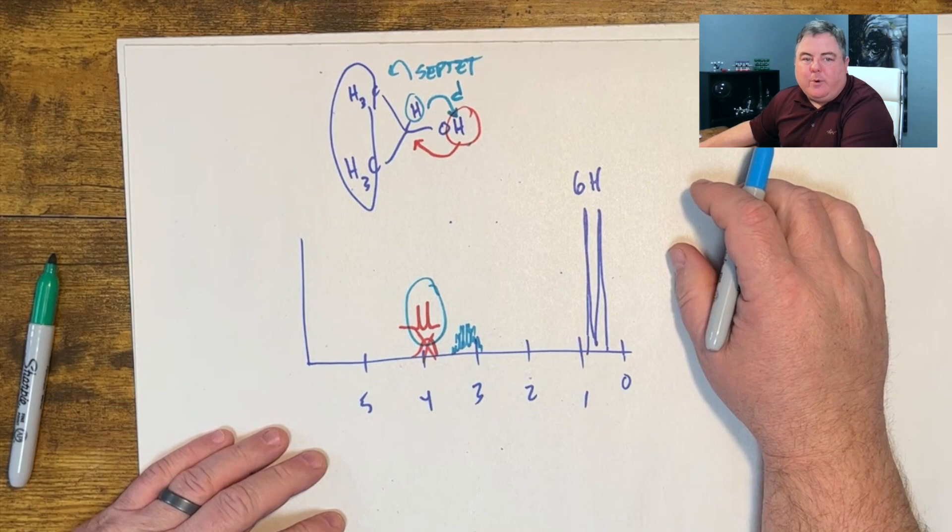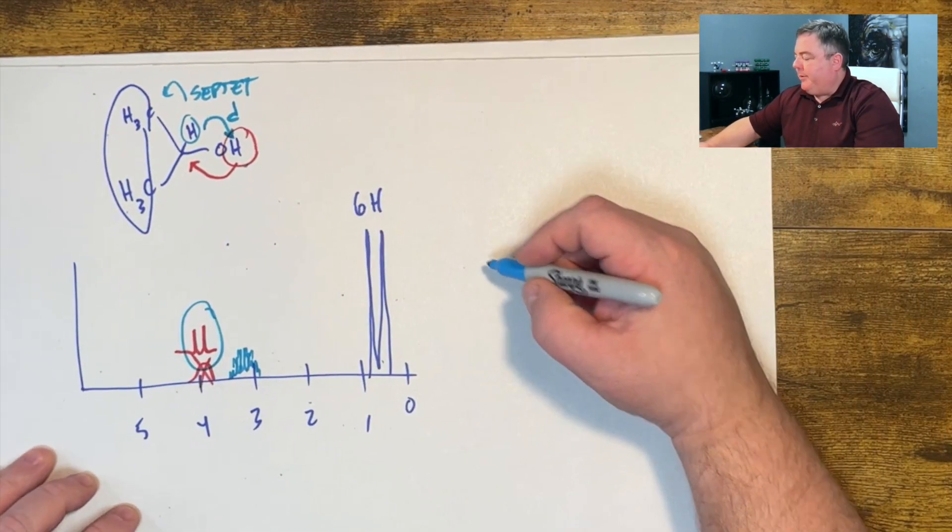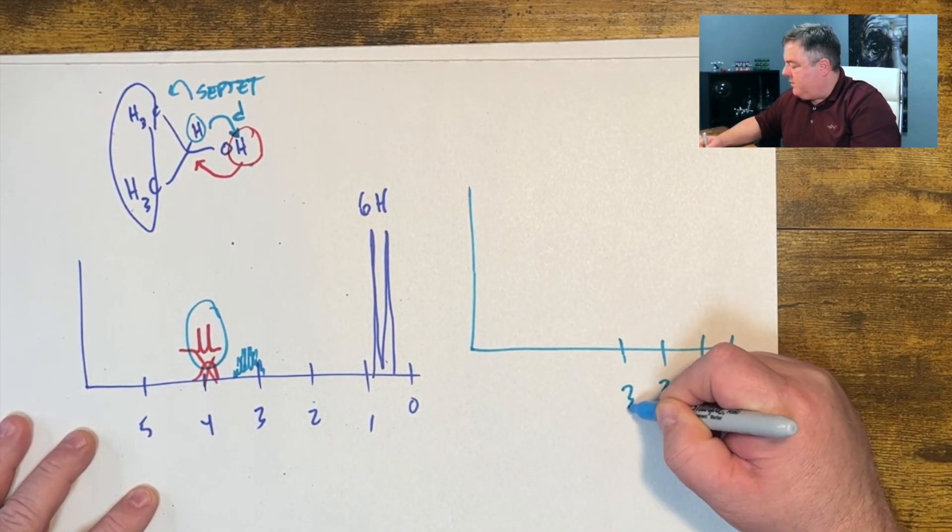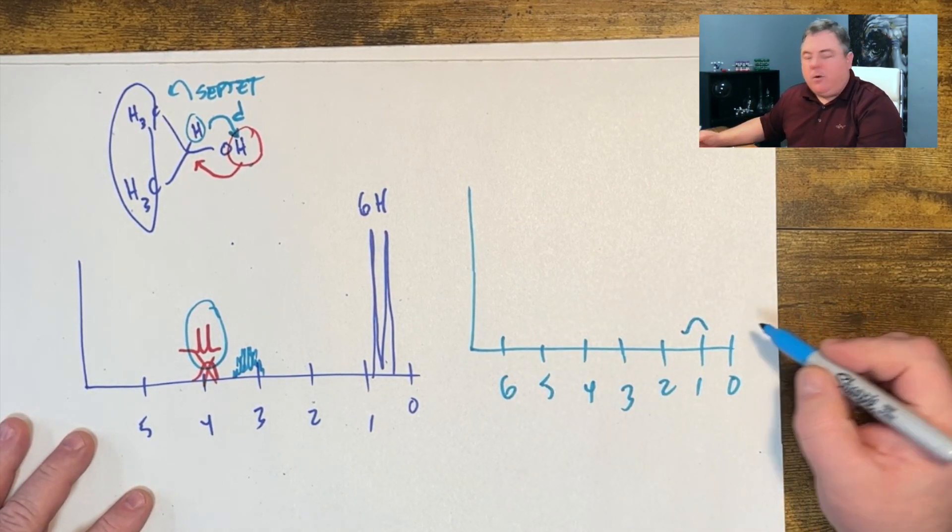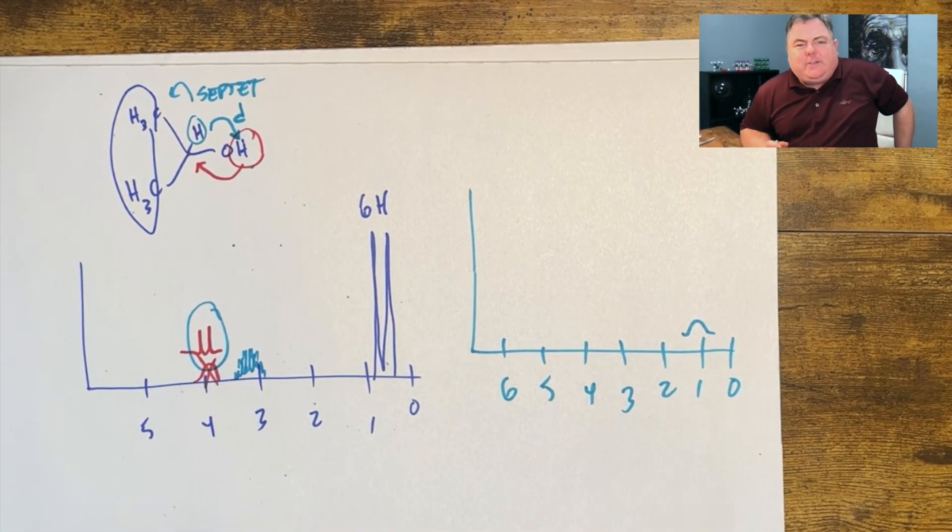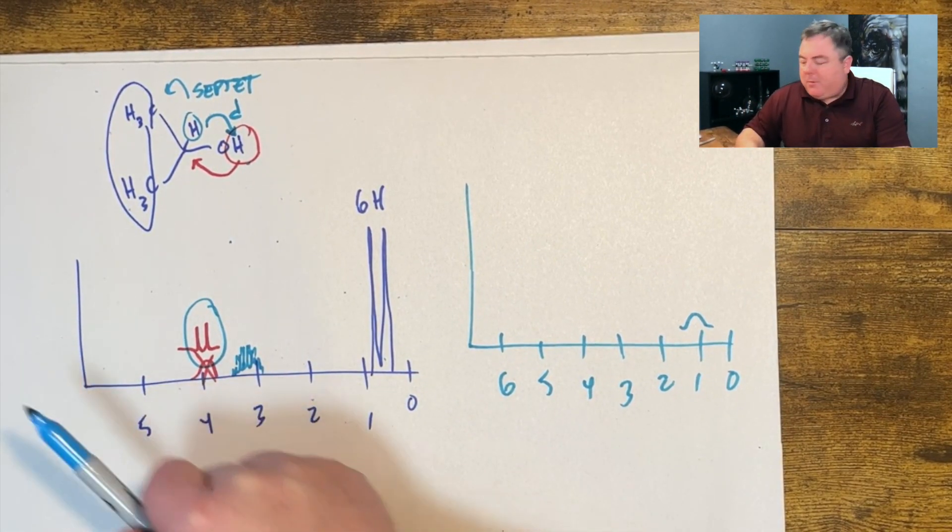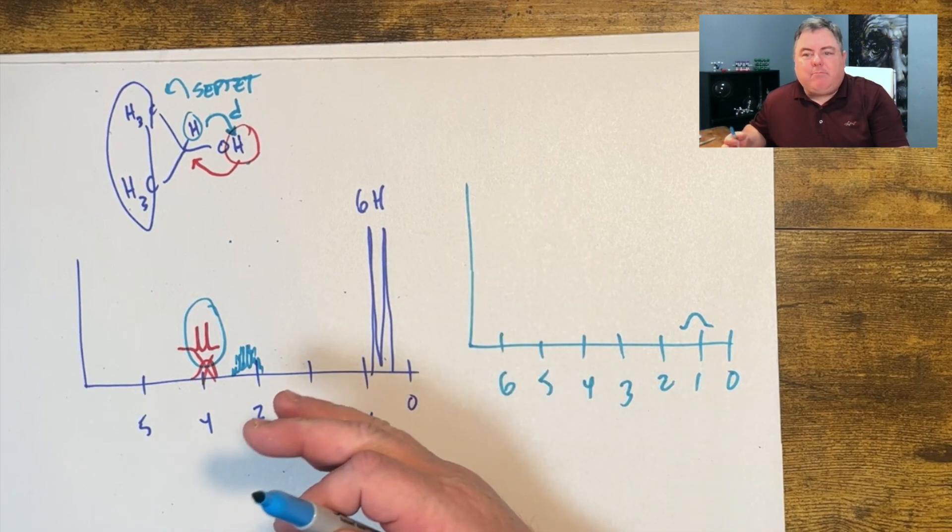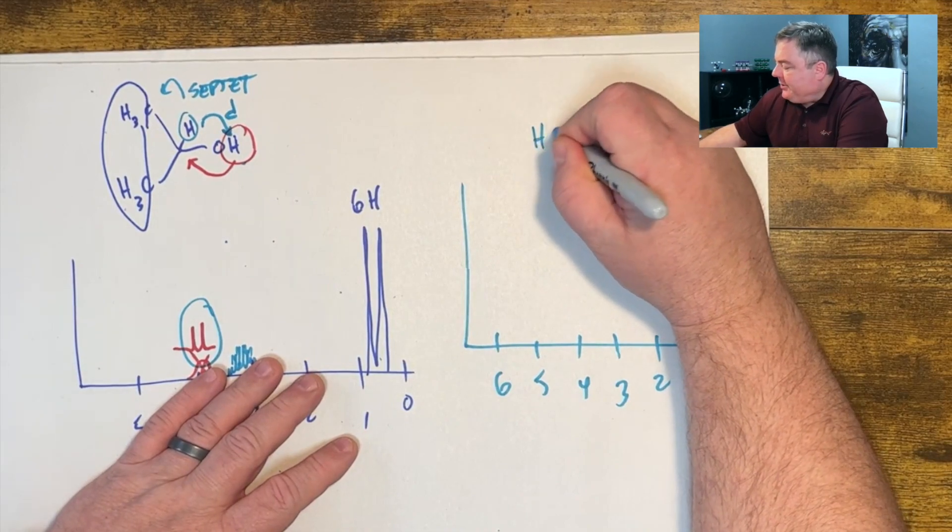Sometimes the peaks do show up like this. The broad peak for an alcohol might show up down around a half all the way up to six. And the really interesting thing is even for the same molecule, if I run it today in my NMR I might get the peak at one and a half, but if I come back tomorrow and try to run the compound it might be at two and a half. They move around, and here's why they move around.